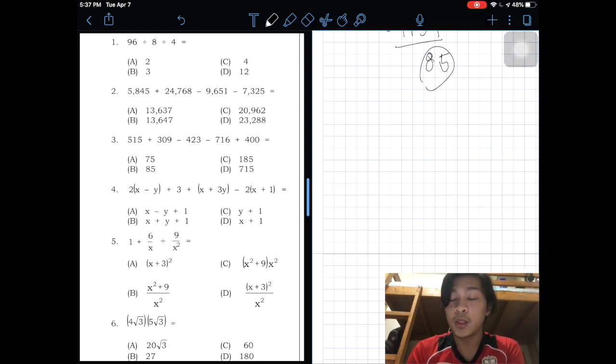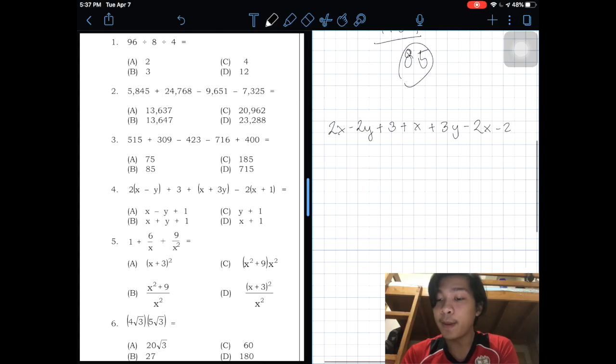Number 4. Distribute first what's outside the parentheses, which is 2x minus 2y plus 3 plus x plus 3y minus 2x minus 2. Now, combine like terms. You can remove 2x and negative 2x. Combine to get x. Then 3y minus 2y, which is y. You can see immediately, so A, C, and D are eliminated. The answer is B.